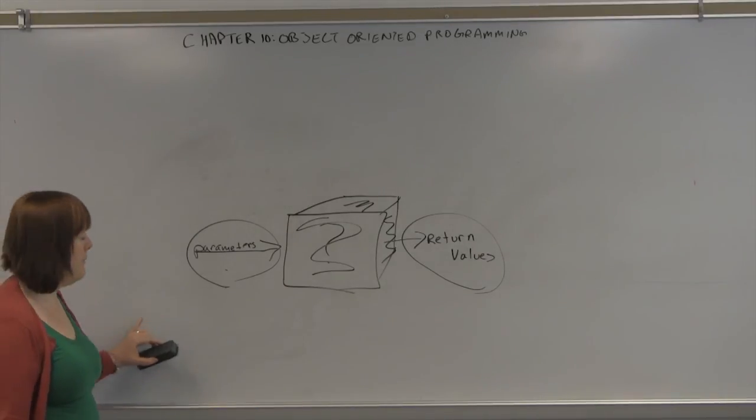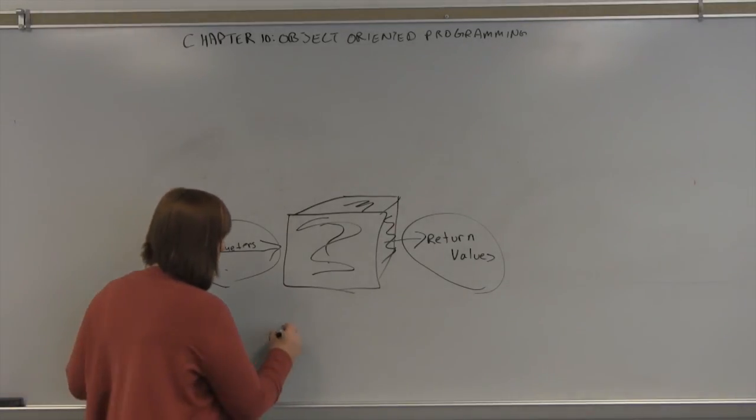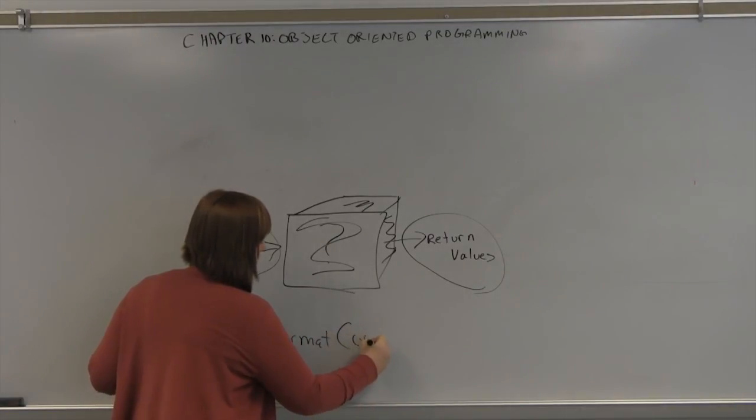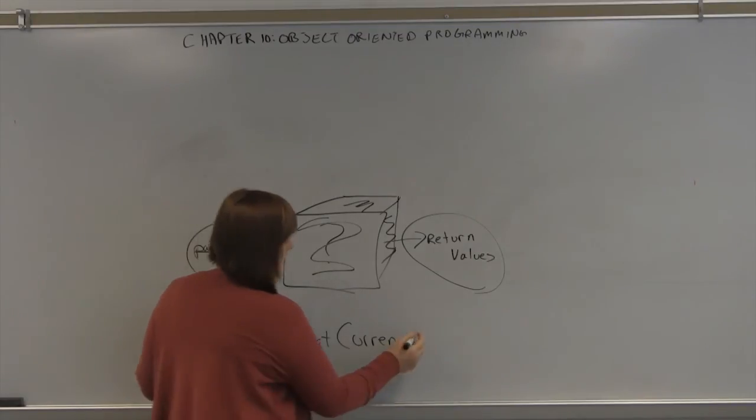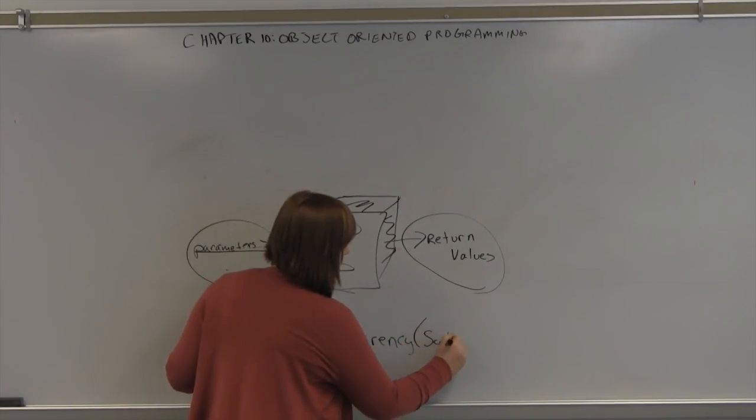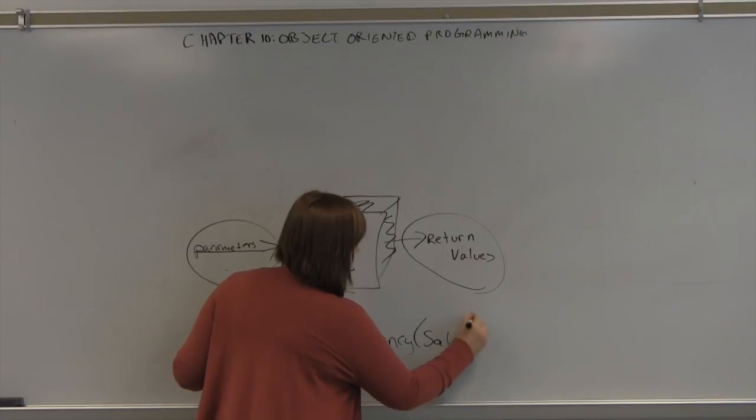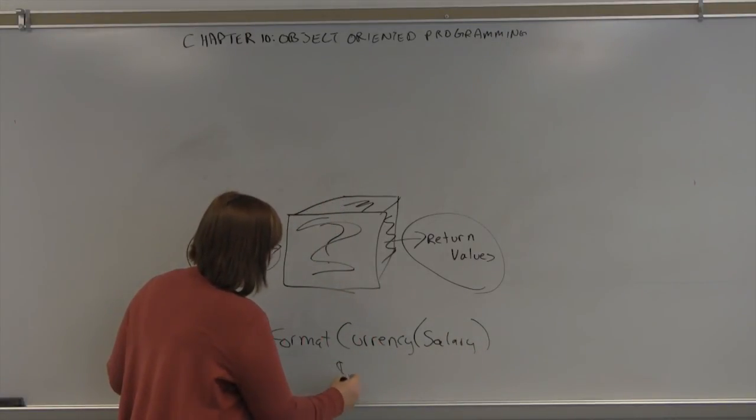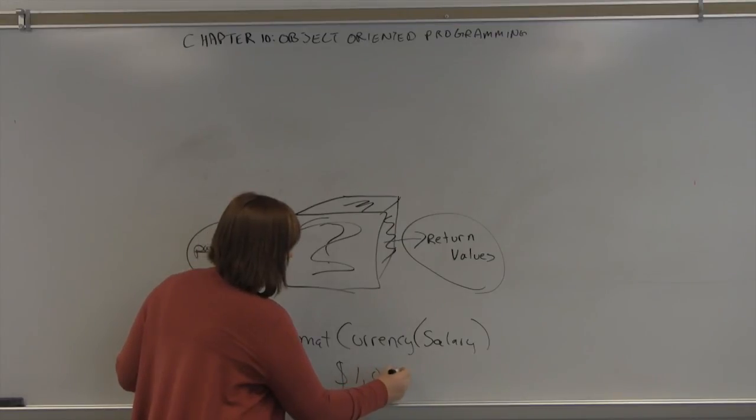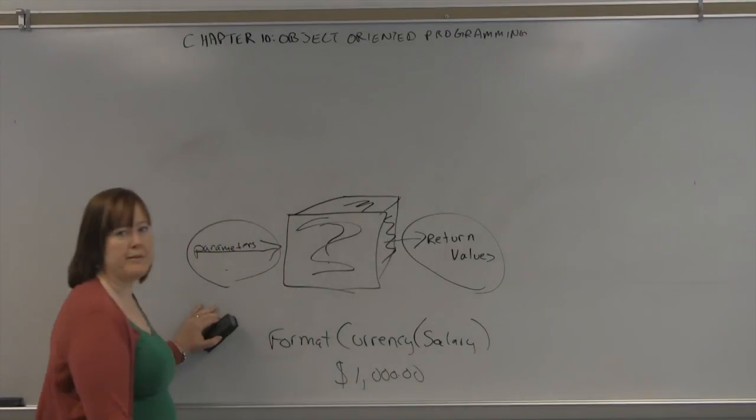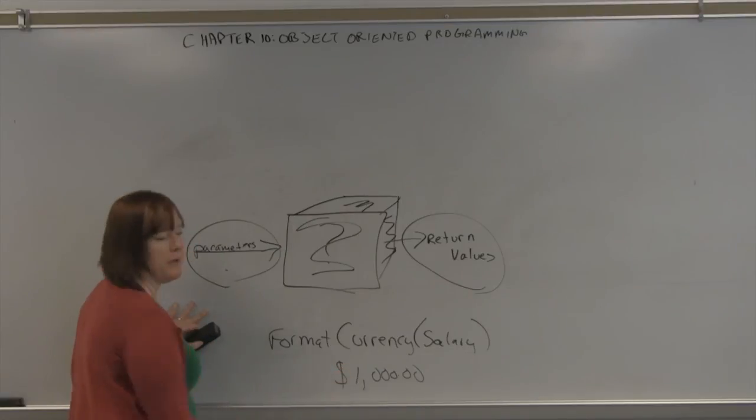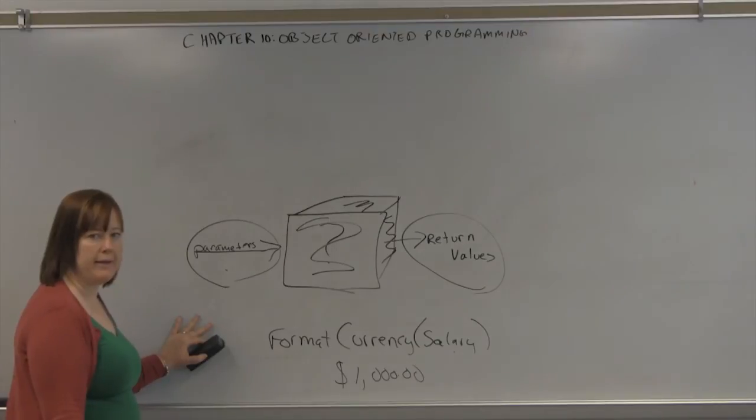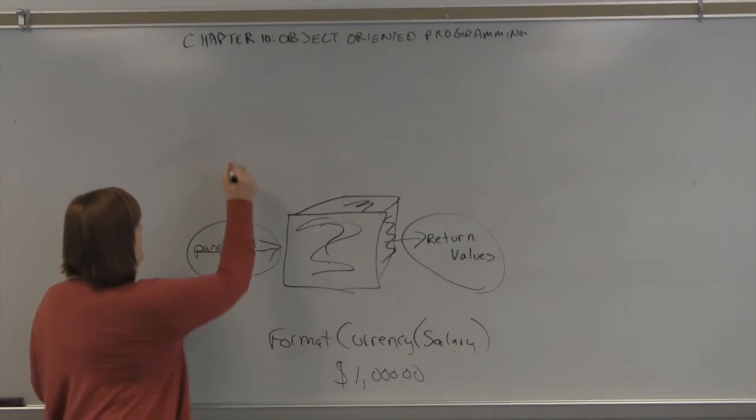And so that allows us to use all sorts of different classes. Now with visual logic, an example of this is we have the format currency. And we'll pass in a value like salary, which would refer to a variable. And we'll get a return value where it is formatted with dollar signs, commas, and decimal points. We don't need to know how it does it. We just need to know what we're going to pass in and what we're going to get back. That's called encapsulation.